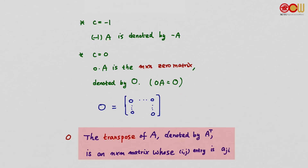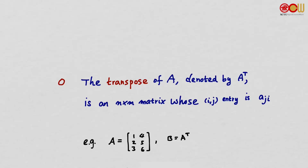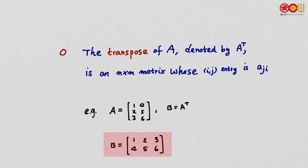The transpose of A, denoted A transpose, is an n by m matrix (if A is m by n), whose (i,j) entry is a_ji. For example, A is this matrix — B is A transpose. A is 3 by 2, so B is 2 by 3. The rows of A become the columns of B: 1 4 comes here, 2 5 comes here, and 3 6 comes here.